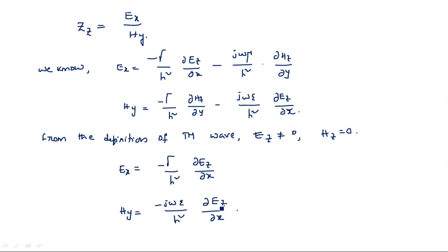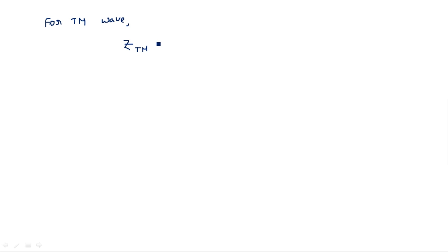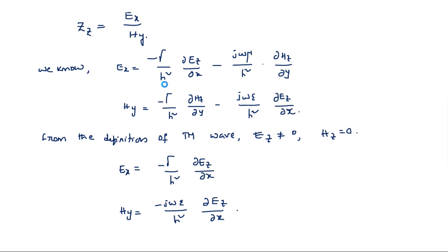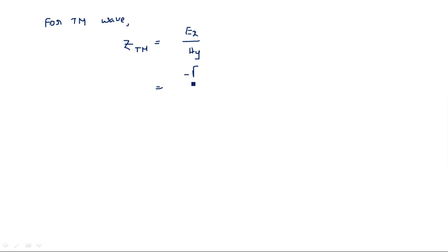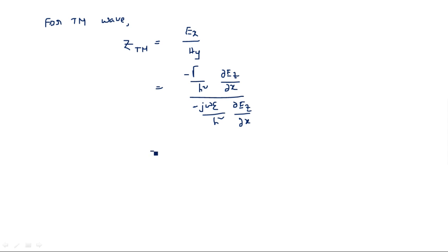For TM wave, Z_TM equals E_X divided by H_Y. So E_X is minus gamma over H-squared times ∂E_Z/∂x, divided by minus j·ω·ε over H-squared times ∂E_Z/∂x. The H-squared and ∂E_Z/∂x terms cancel, giving Z_TM equals gamma divided by j·ω·ε.